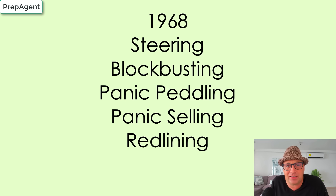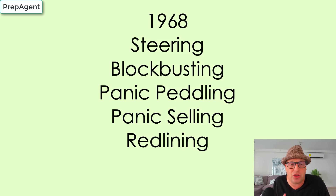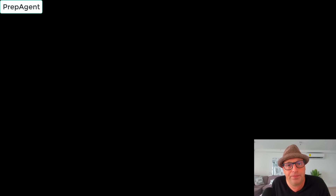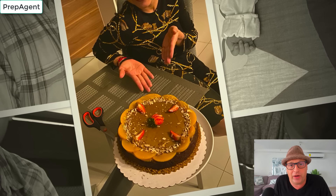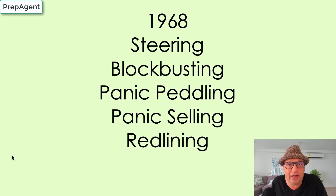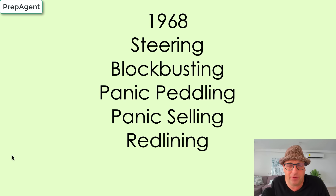Blockbusting, panic peddling, and panic selling deal with sellers. Basically it's saying: you better sell your house because those people are moving to town — you don't want to live by those people, do you? That's a fair housing violation. Redlining has to do with loans — it's when a lender circles an area on a map with a red line and refuses to lend to people who live in that area. That's also a fair housing violation. Remember: steering, blockbusting, panic peddling, panic selling, and redlining — and fair housing was enacted in 1968.